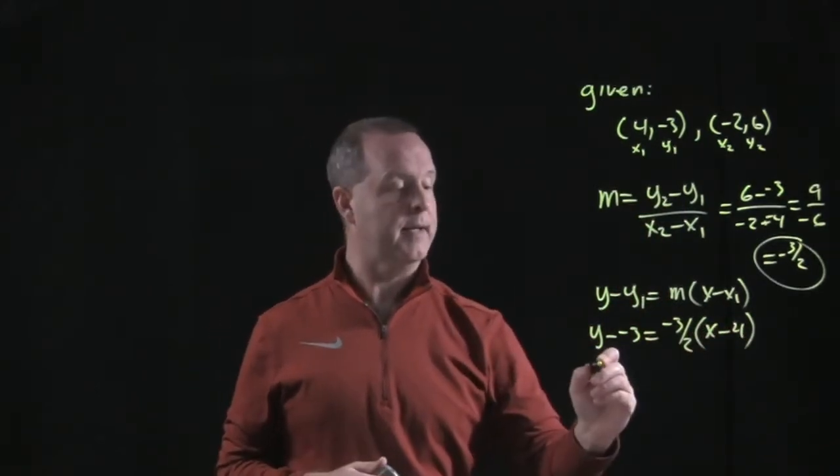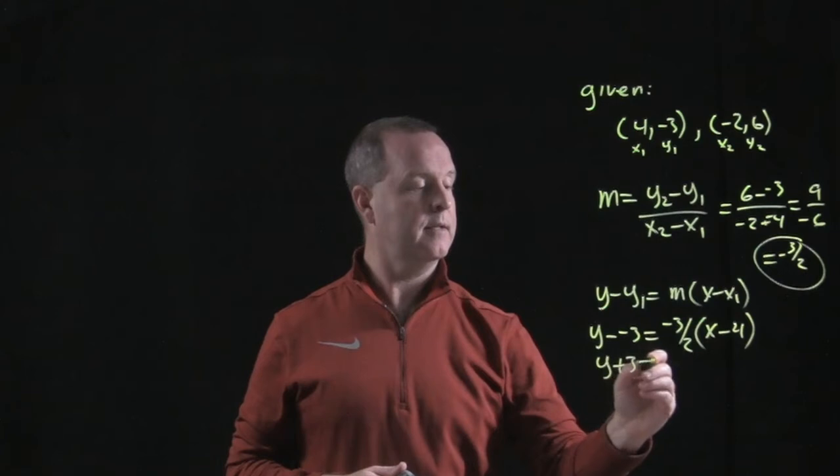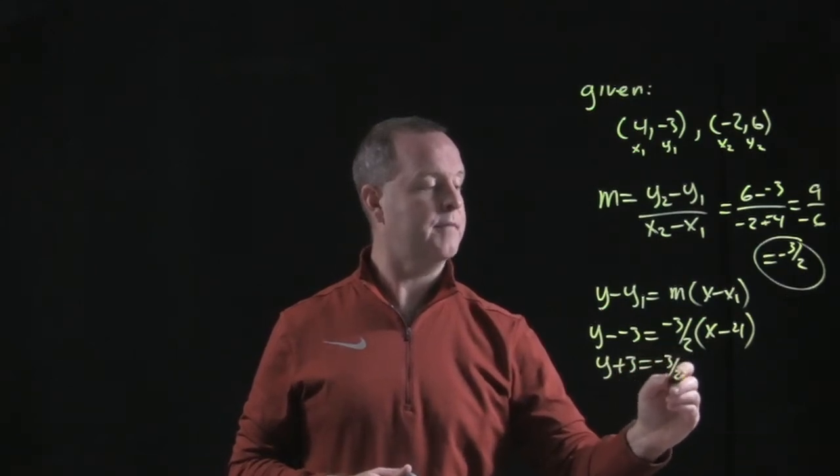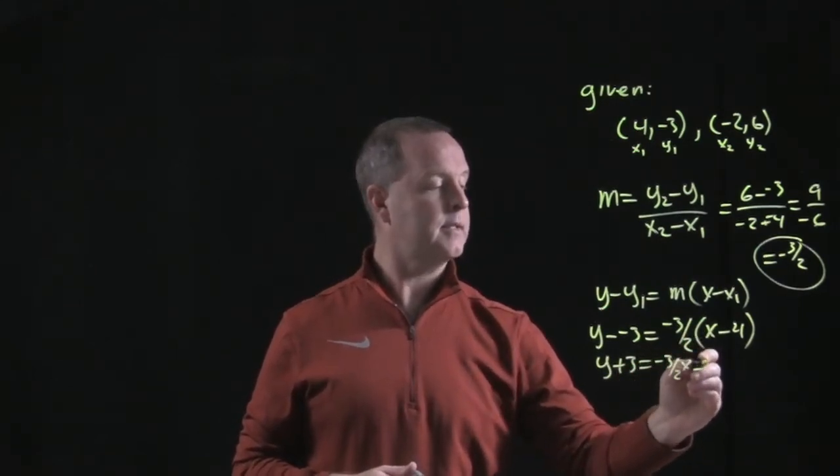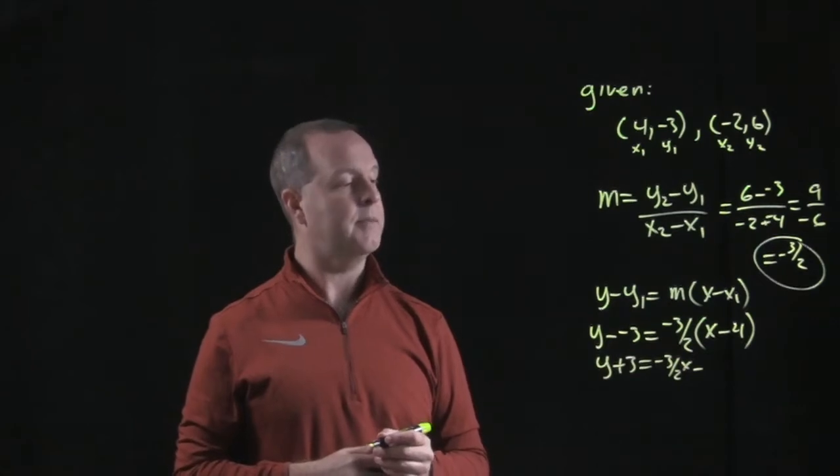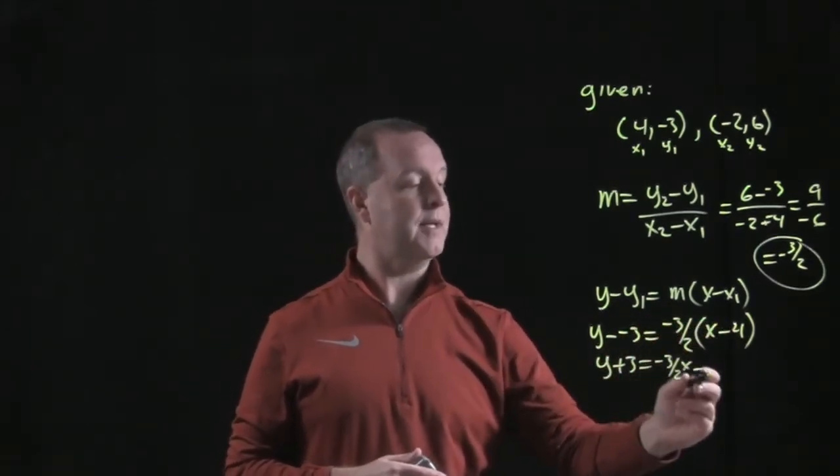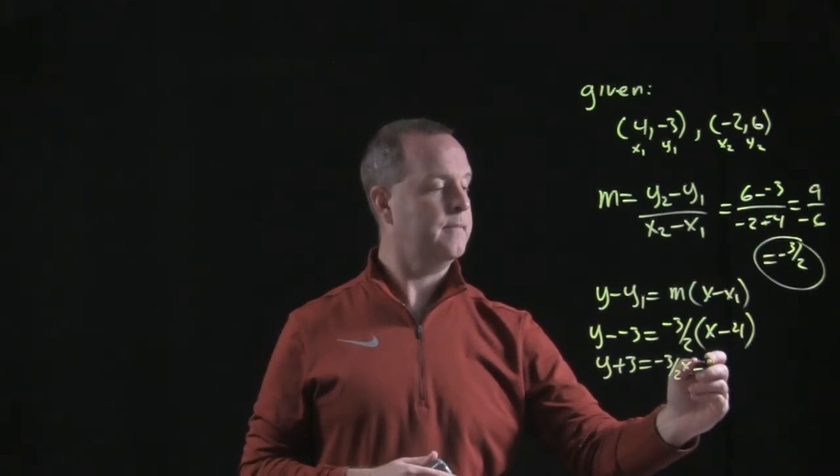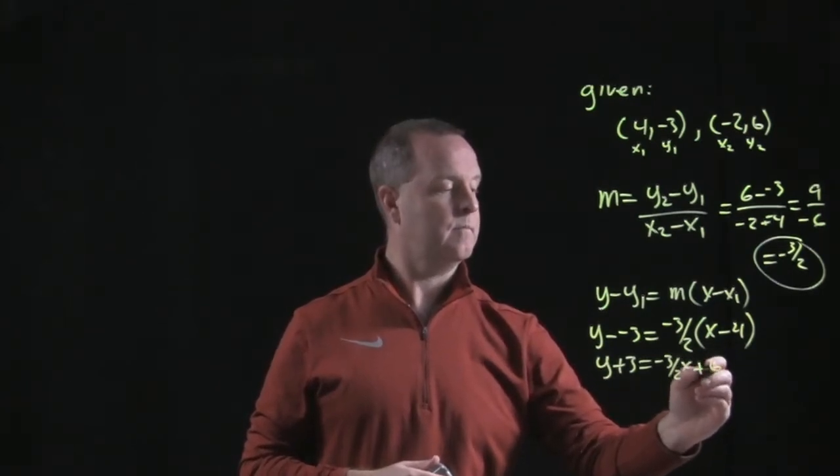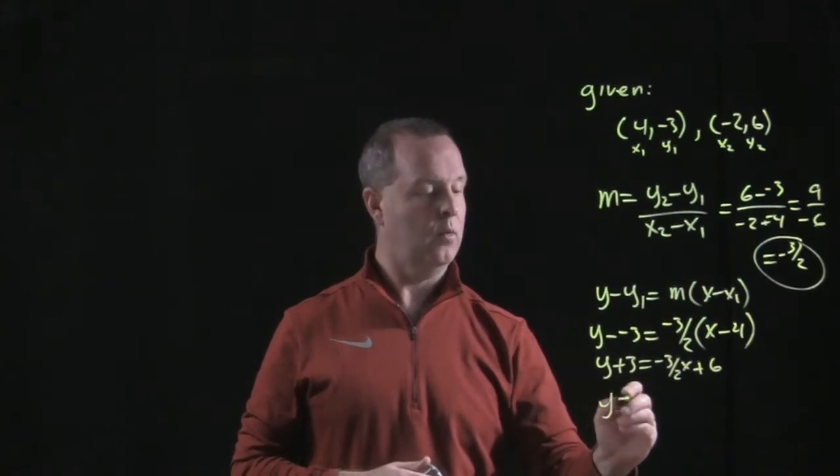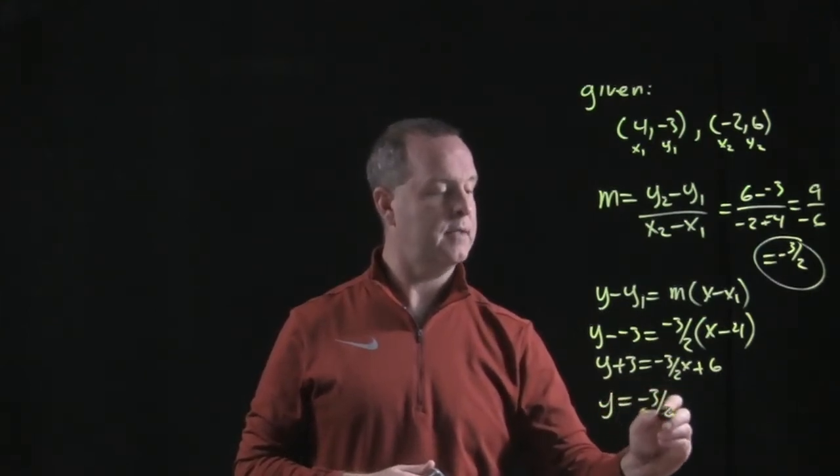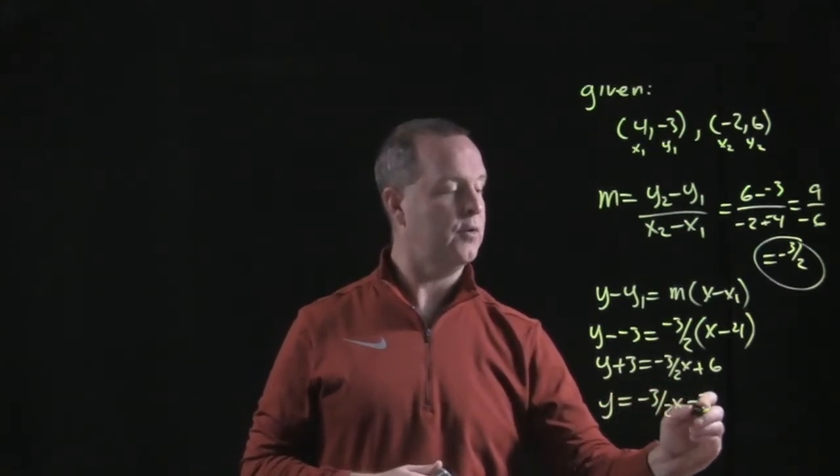Now let's just clean that up a little bit. y plus 3 equals negative 3 halves x minus negative 3 halves times negative 4. Negative 12 makes it positive 12 plus 6. Subtract 3 from both sides.